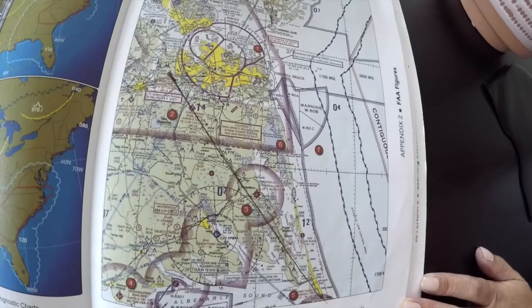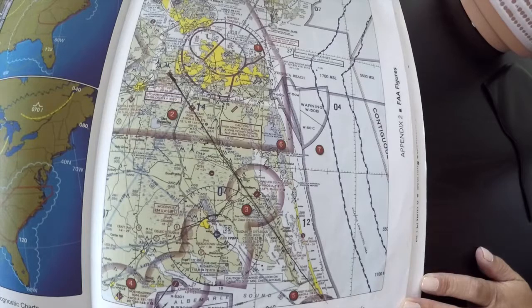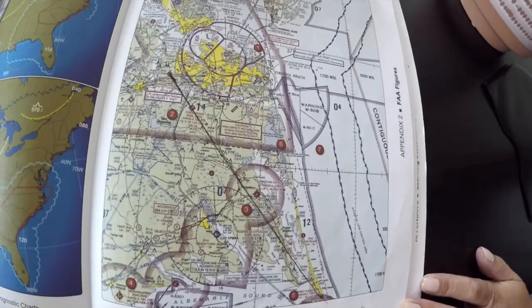So you add westerlies and you subtract easterlies. So we have our true course of 320, and we're going to add 11 degrees to that because it is a westerly. And we're going to get a magnetic course of 331.